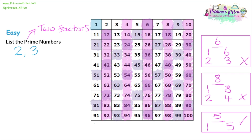Moving on to four — we've already coloured four in. Four is part of the two times table, so four cannot be a prime number. We don't need to colour in the four times table because every number in it is even, so it's already in the two times table. Then moving on to five — we already checked five and know it's a prime number, divisible only by one and five. Now we colour in the five times table.